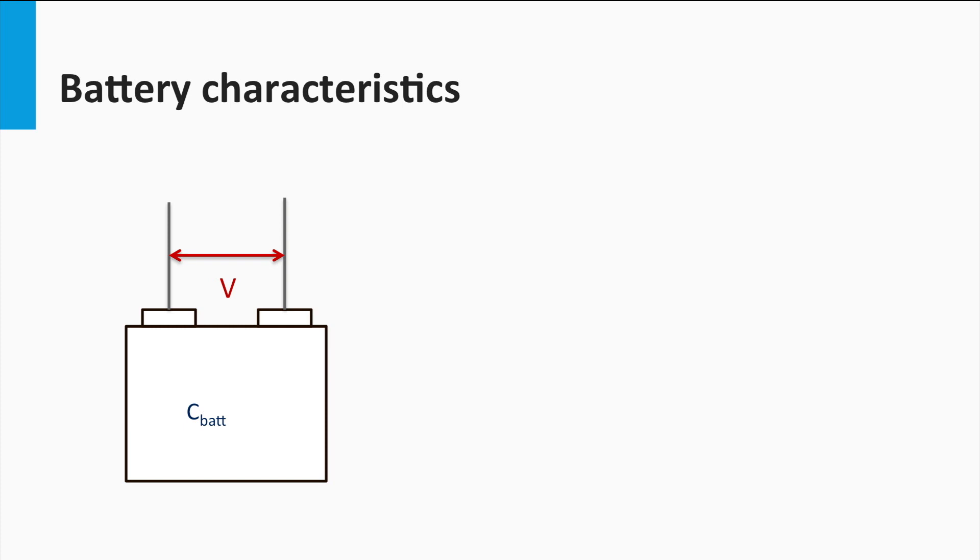We must not confuse the battery capacity with the energy capacity. Energy capacity of the battery, or any storage device for that matter, is the total amount of energy that the device can store. This is usually measured in watt-hours. How do we calculate the energy capacity of the battery, knowing the voltage and the battery capacity? The energy capacity is nothing but rated battery voltage in volts multiplied by battery capacity in amp-hours, giving the total battery energy capacity in watt-hours.